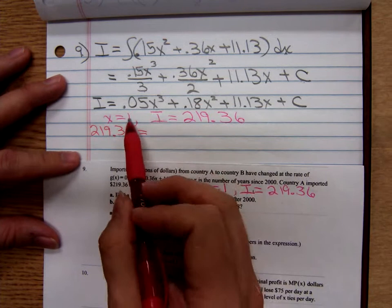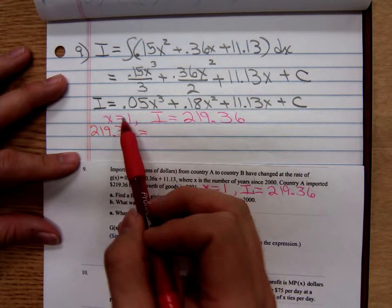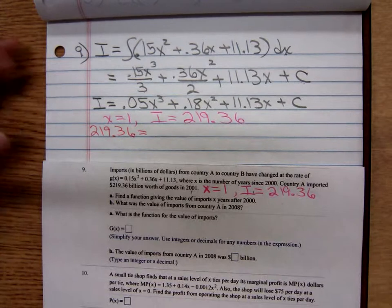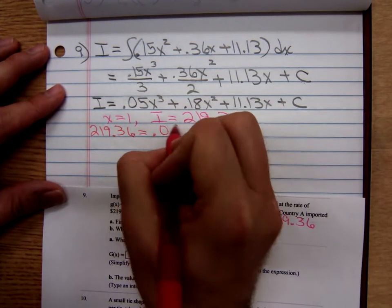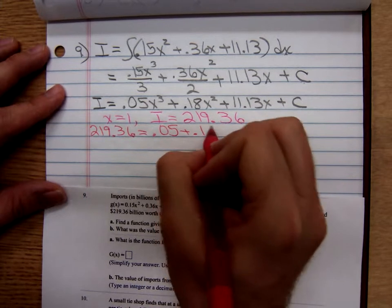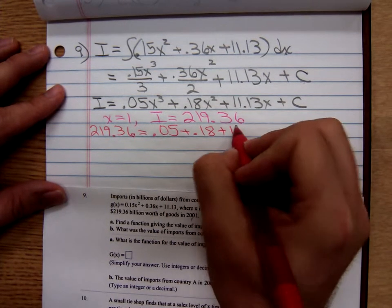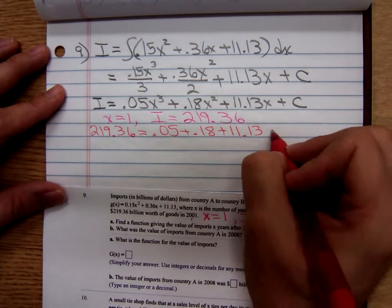1 to any power is 1, so we just have 0.05 plus 0.18 plus 11.13 plus C.